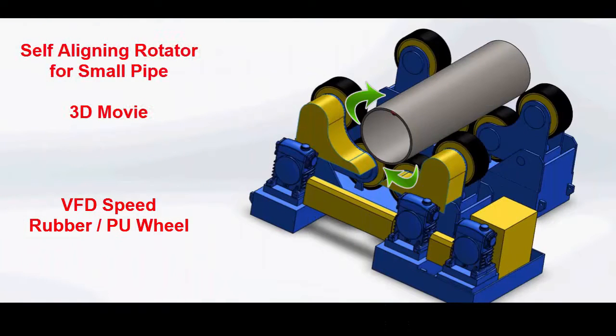Self-aligning turning rolls. Capacity is 5 to 800 ton. Self-aligning turning rolls adjust the wheel centerline setting automatically when the vessel is lowered into place.